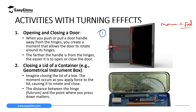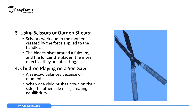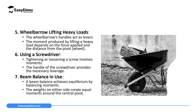Another case is closing the lid of a container, such as a geometrical instrument box — the lid turns about its hinges as you open and close it, causing a turning effect. Using a scissor or garden shear is also an example: when you push the handles of a garden shear together, the cutting edges also move together and cut. Pulling them apart causes the edges to move apart. Children playing on a seesaw is another good example — one side goes down while the other goes up, producing a turning effect.